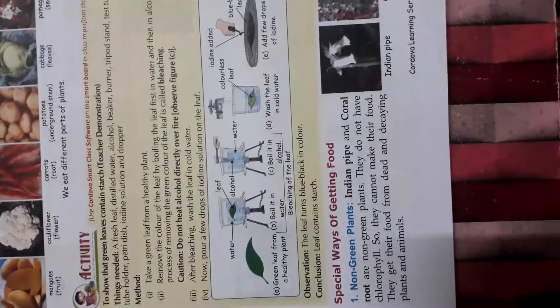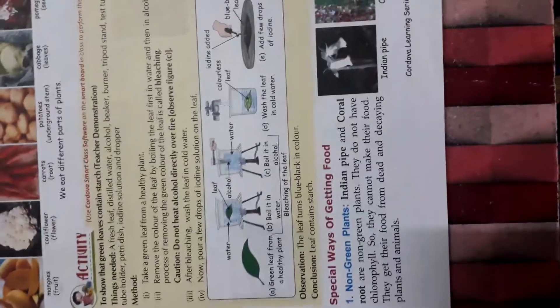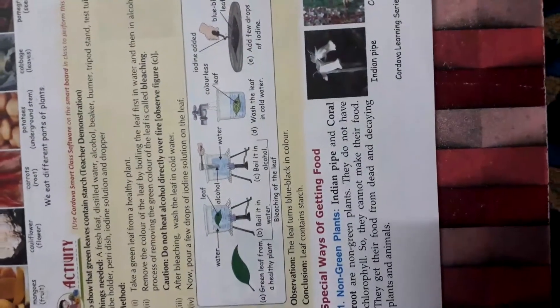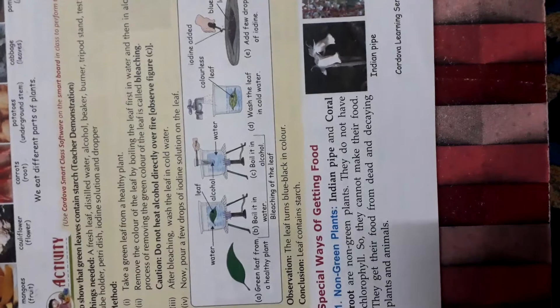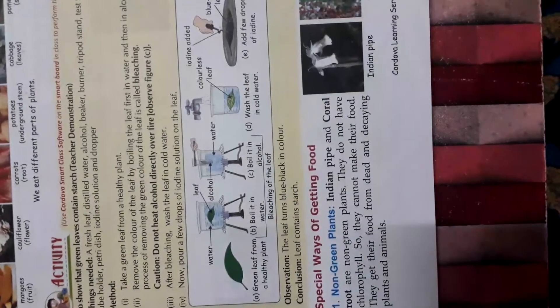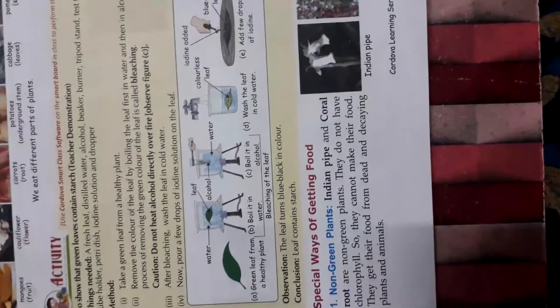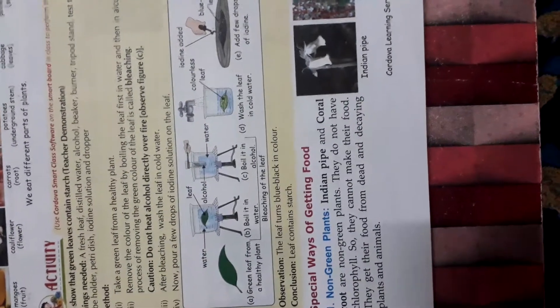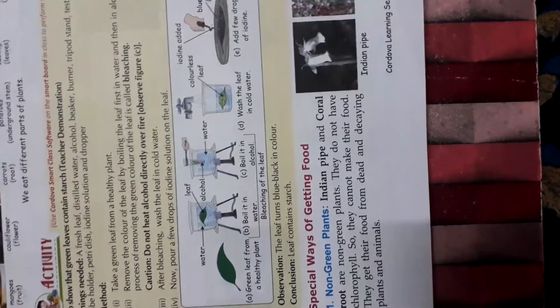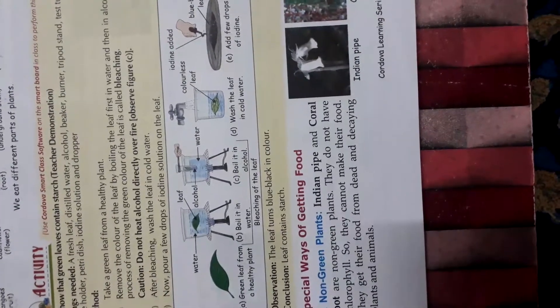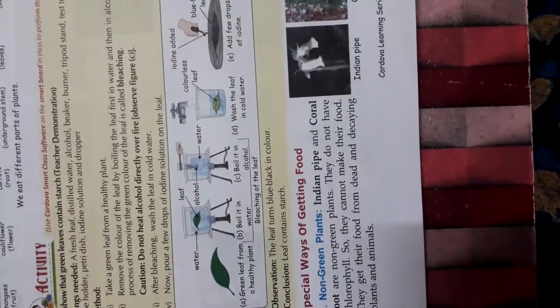Today we will start the topic: special ways of getting food. Number 1 is non-green plants. Indian pipe and coral root are non-green plants. They do not have chlorophyll, so they cannot make their food. They get their food from dead and decaying plants and animals.